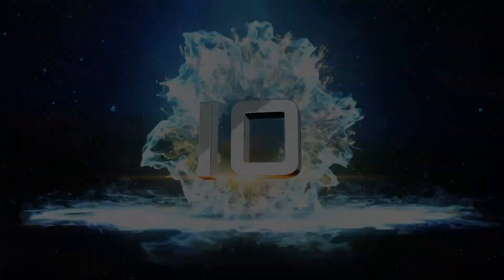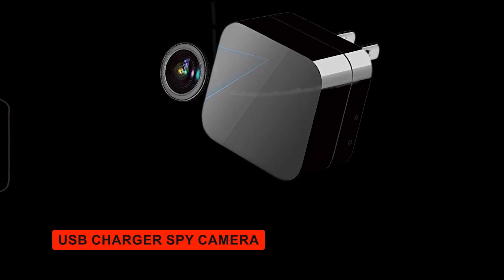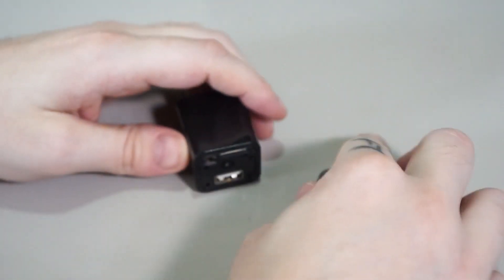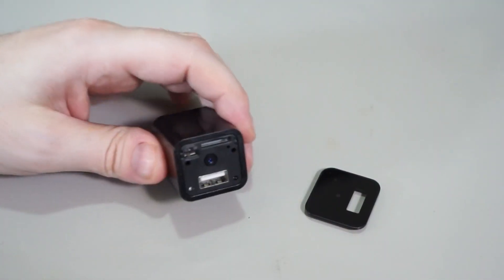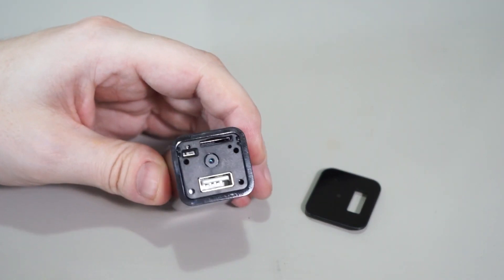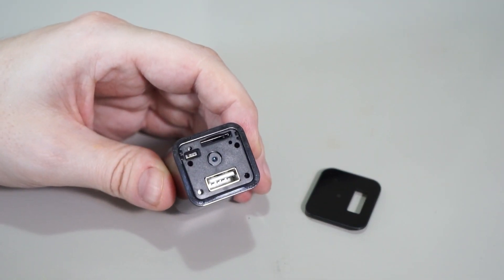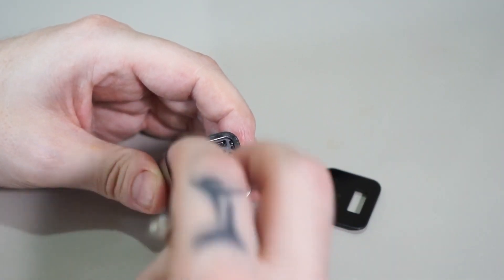USB Charger Spy Camera. Looks like an ordinary USB charger, but it houses a covert spy camera. It records video discreetly and is an excellent choice for security in your home or office without anyone knowing.